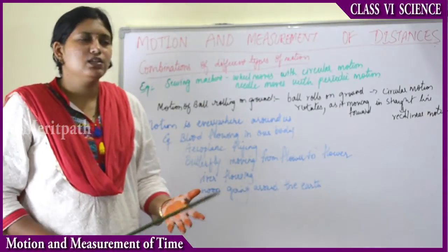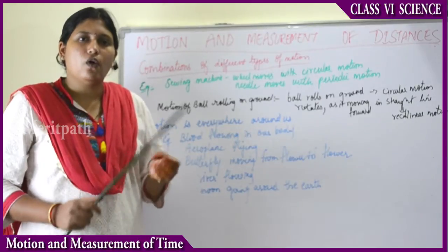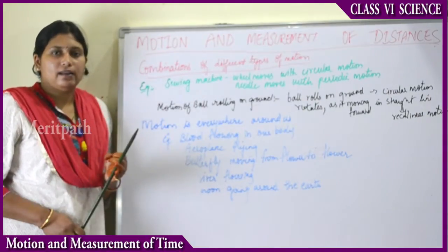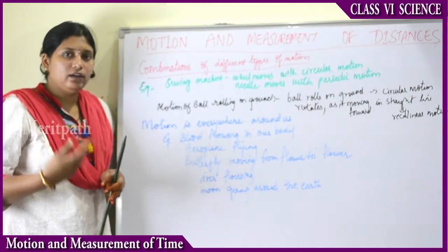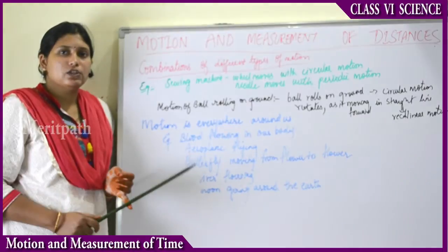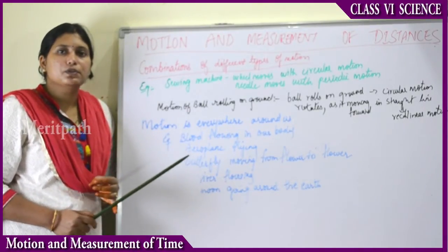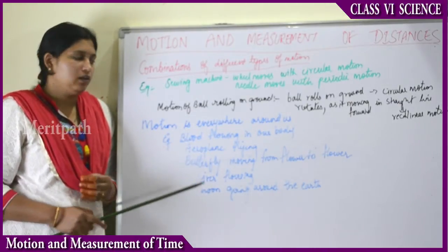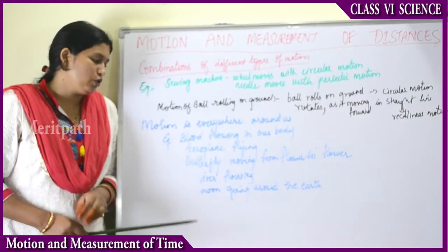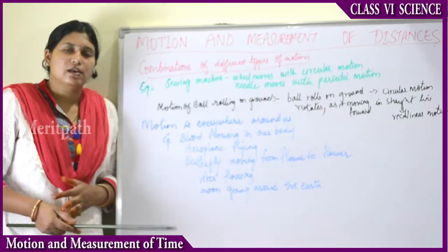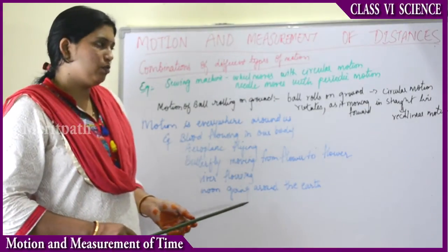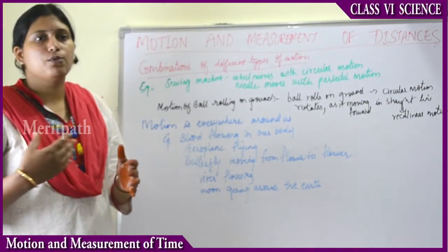Motion is everywhere around us. Blood flows continuously in our body through blood vessels, arteries, and veins — so blood is also in motion. Aeroplanes travelling from place to place are in motion. A butterfly flies from one flower to another for food — it is in motion. Birds travel from place to place, even country to country. Rivers flow through many towns and cities. The moon revolves around the earth — so the moon is also in motion.